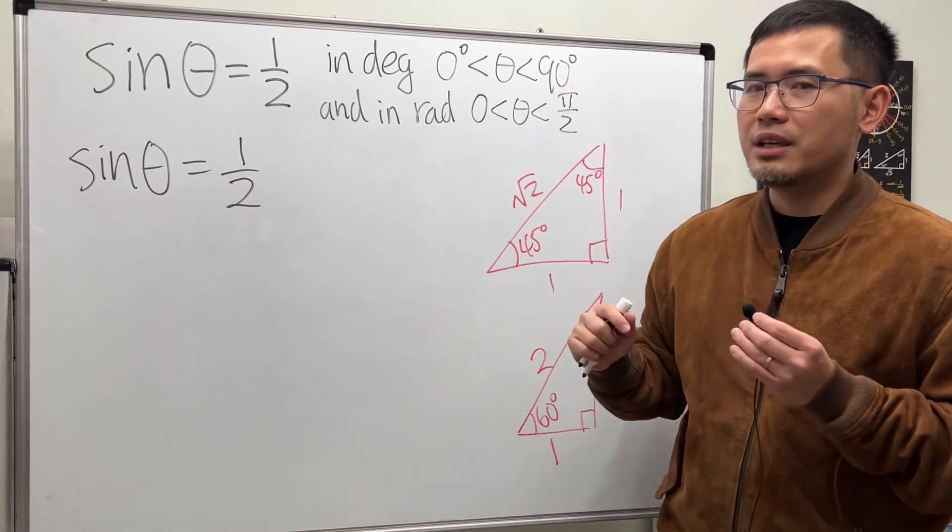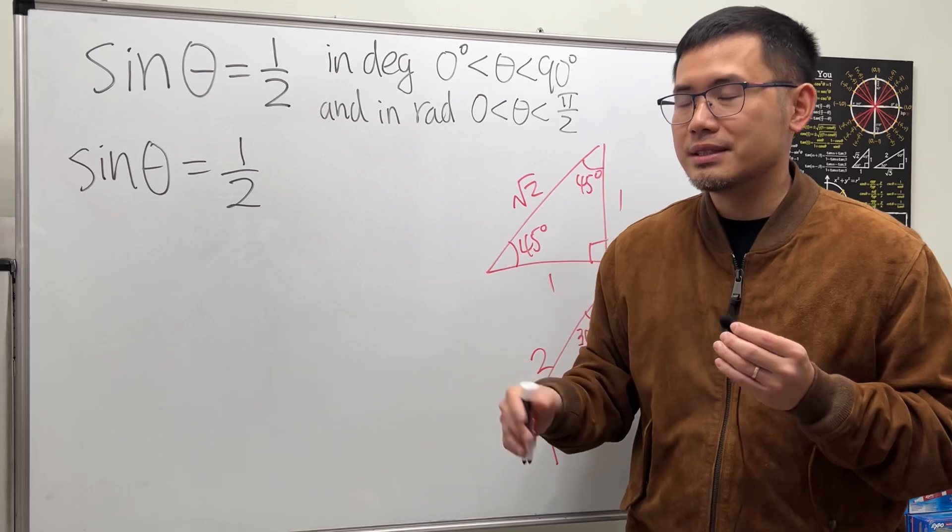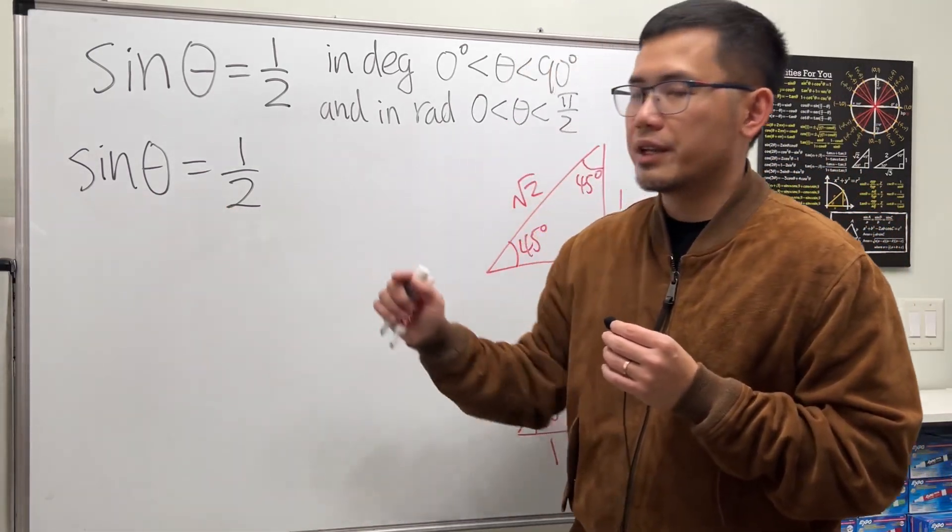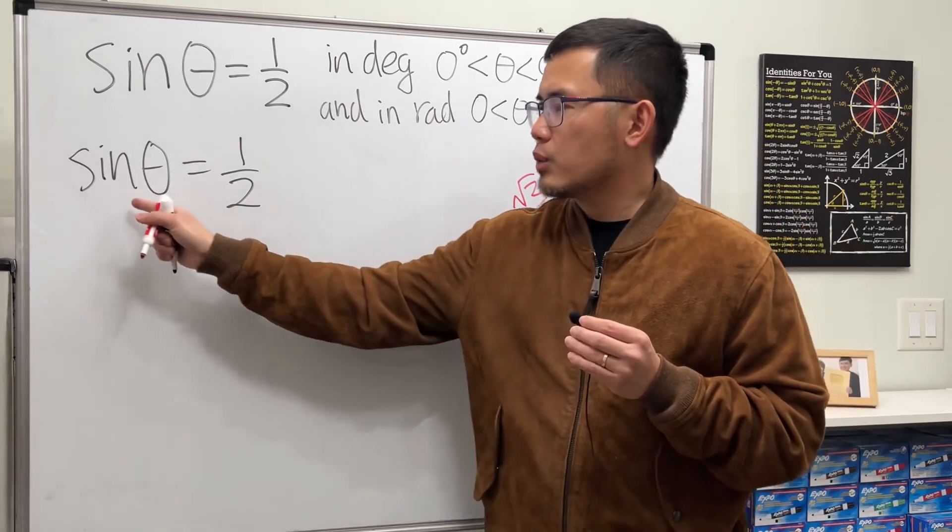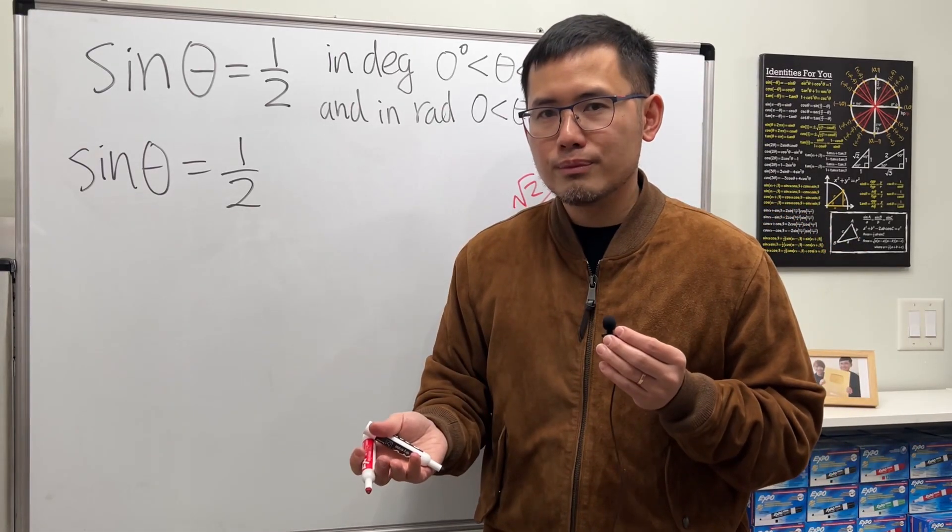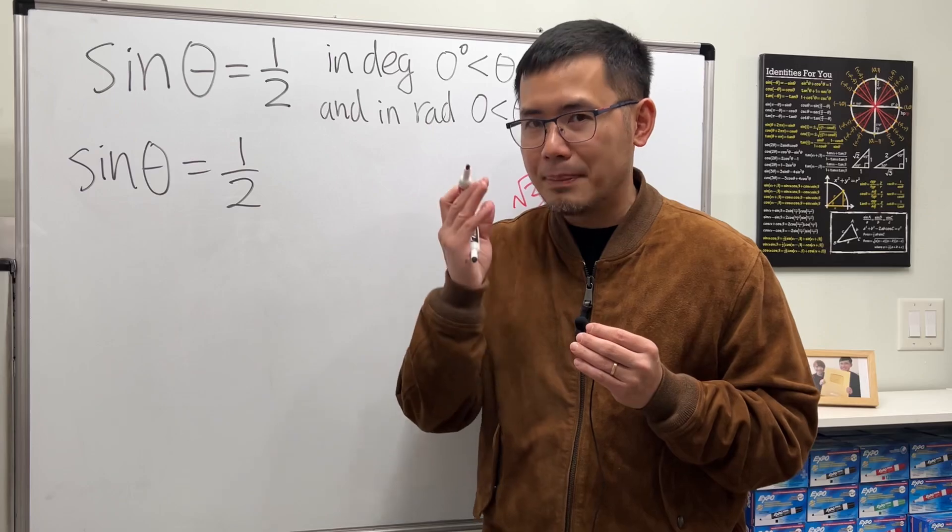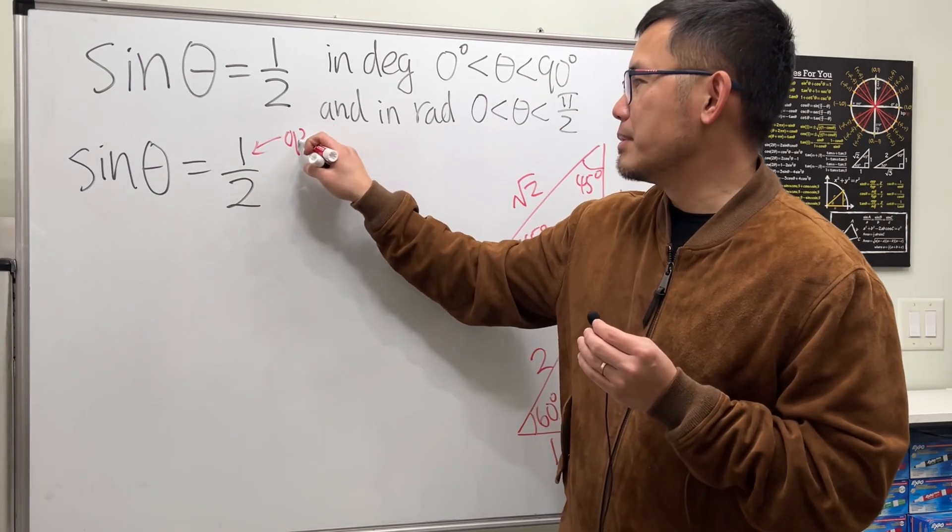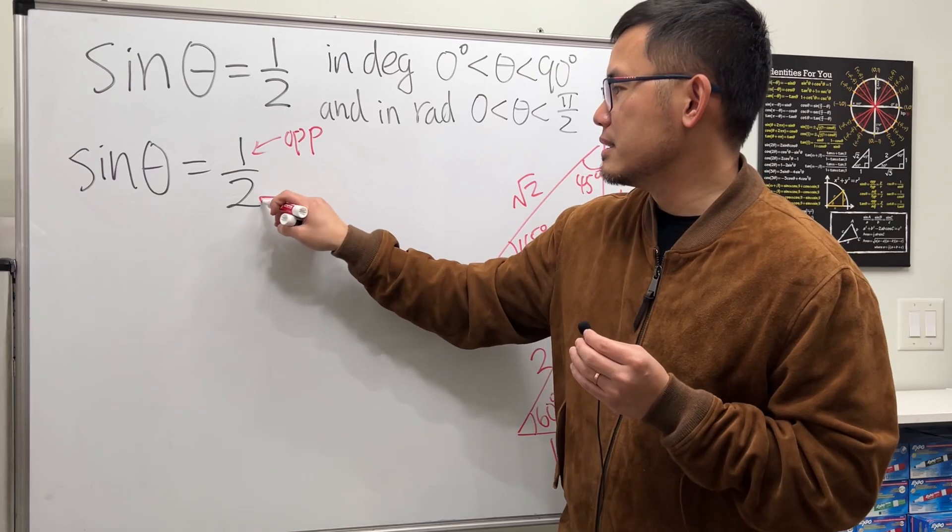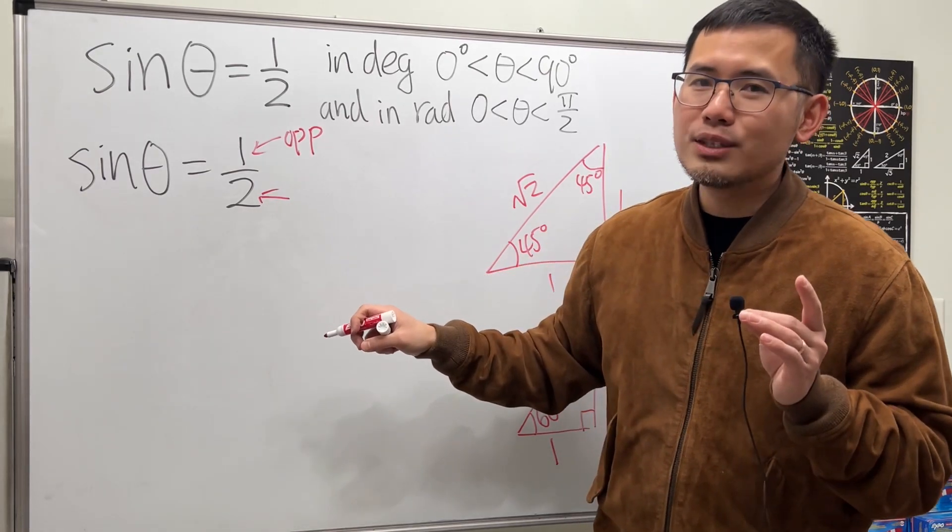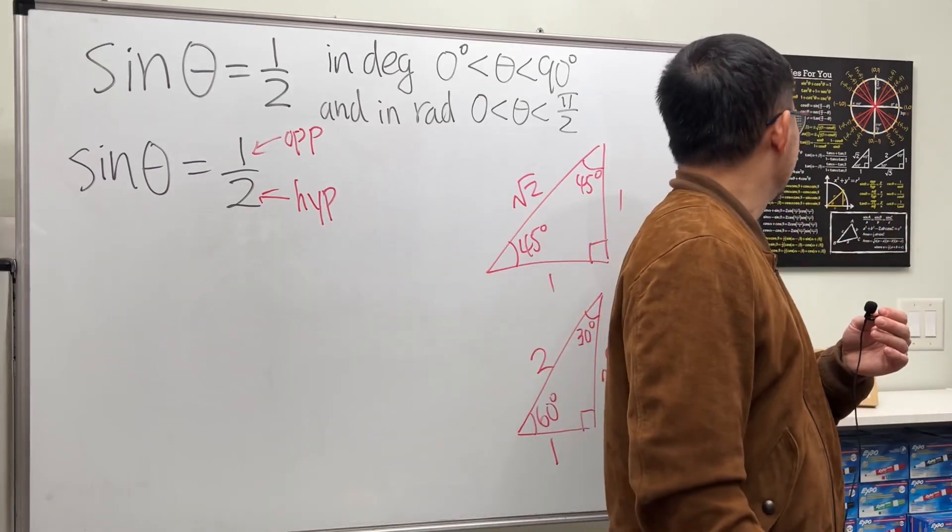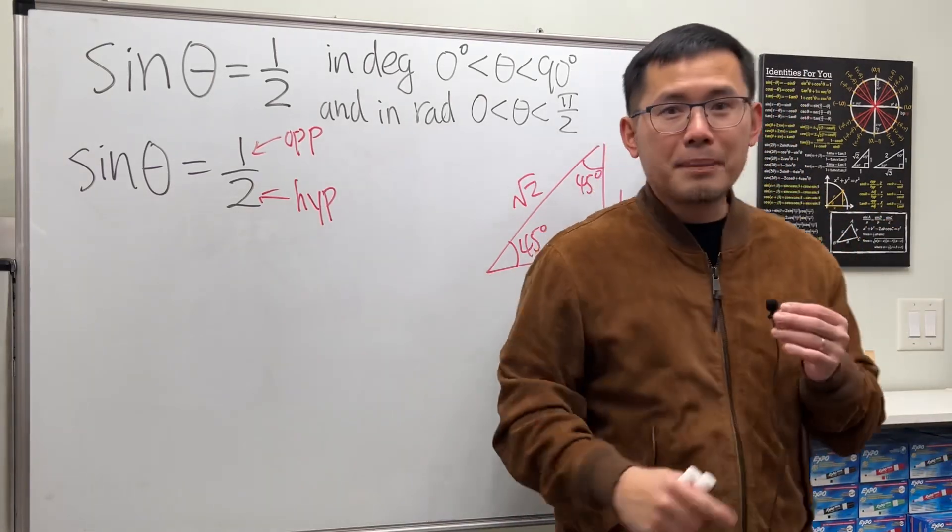Later on you will have to be dealing with angles that's bigger than 90 degrees, but I'll talk about it later on. Based on this right here, just remember, what's the definition of sine in a right triangle? The answer is opposite over hypotenuse. So here is the opposite, and then here is the hypotenuse. Opposite over hypotenuse.